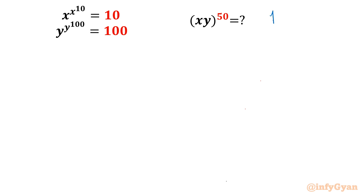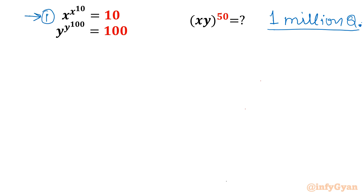We will use the properties of exponents. See what I am writing — this is a 1 million question. We will talk about why a little later. Let us label these as equation 1 and equation 2. If you observe the given equations, they are identical except for the values on the right-hand side and the exponent values changing.